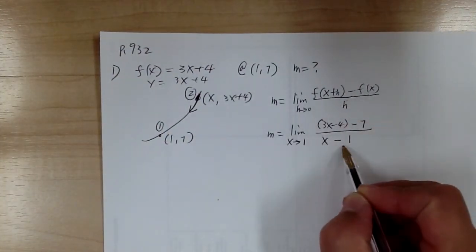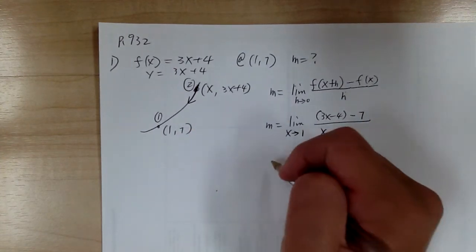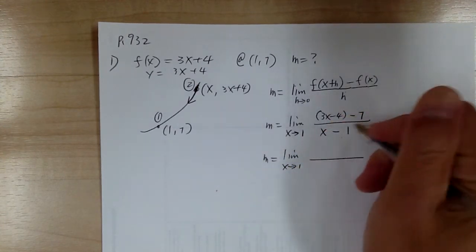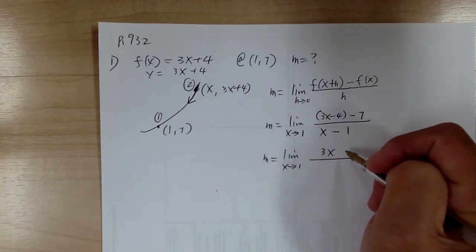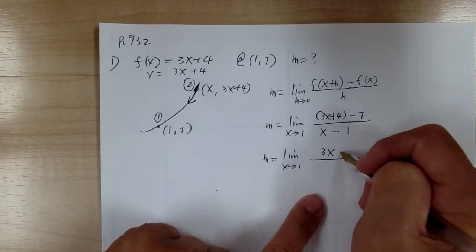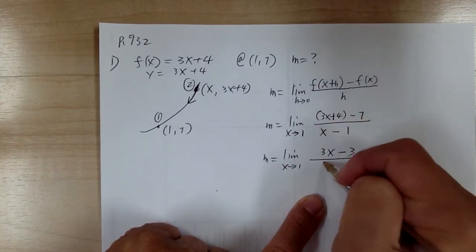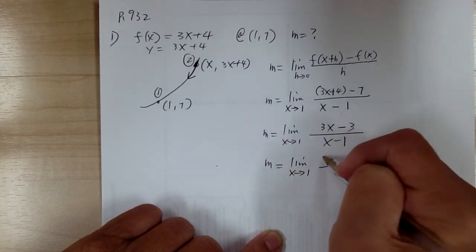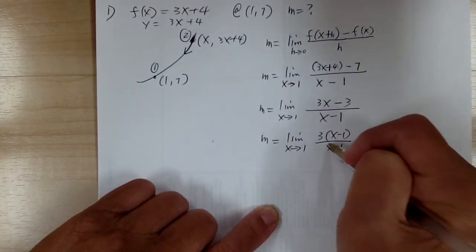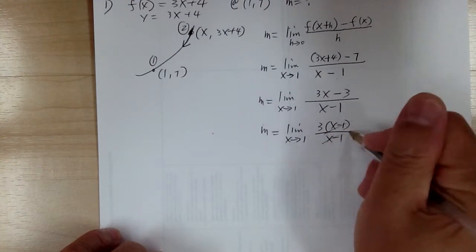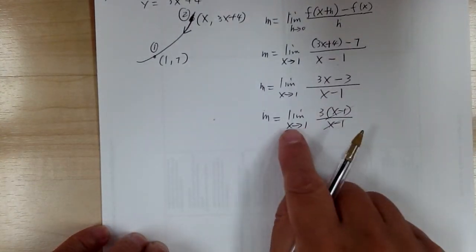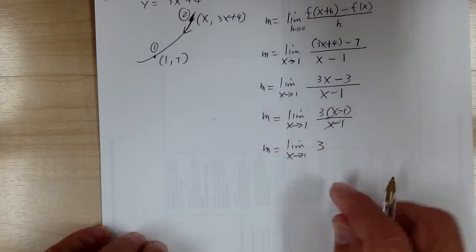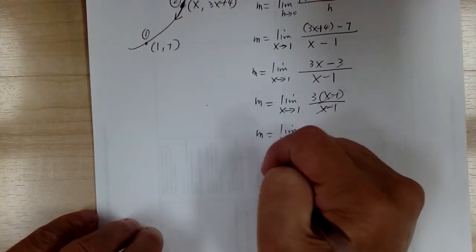This form is a little bit easier to do. So the slope equals — go ahead and simplify this. You get 3x minus 3 over x minus 1. Factor out the 3, and over here you can cancel these things out. Then you can apply the limit. Now since there's no x, there's nothing to substitute. So the slope will equal to 3.